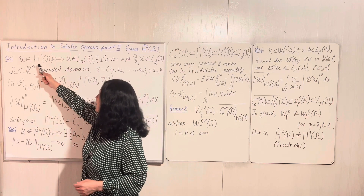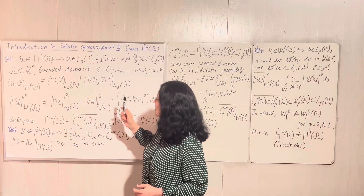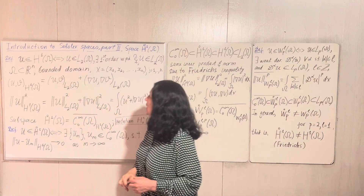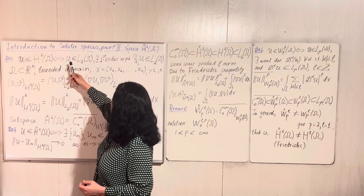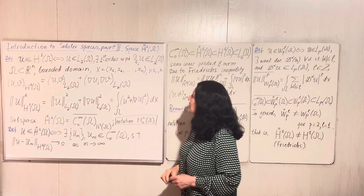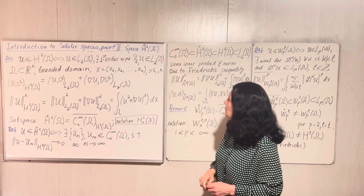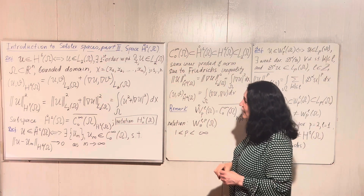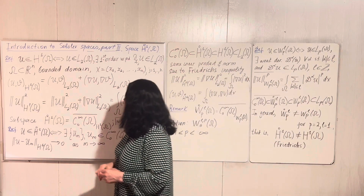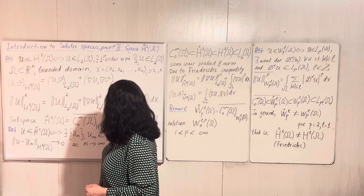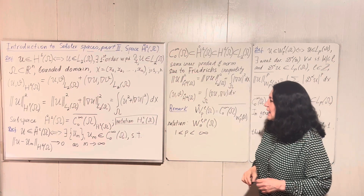A function u belongs to the space H1 on a domain omega, and we will be assuming everywhere that omega is a bounded domain in R^n. So u is in H1 means that u is in L2, and there exist first-order weak partial derivatives that also belong to L2. We have shown that H1 is a Hilbert space, with a defined inner product and norm.